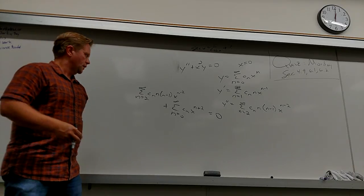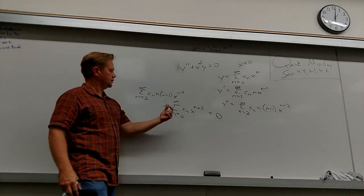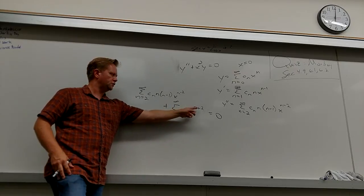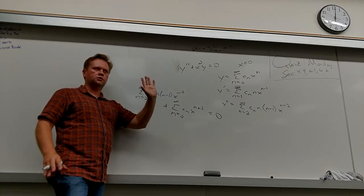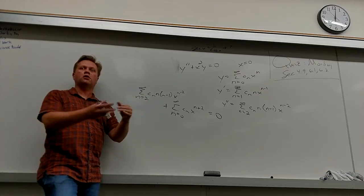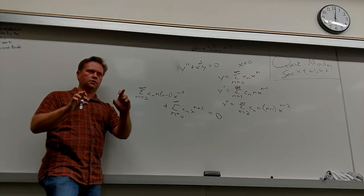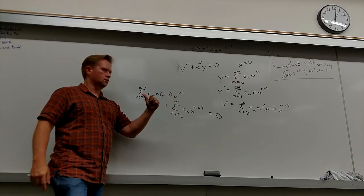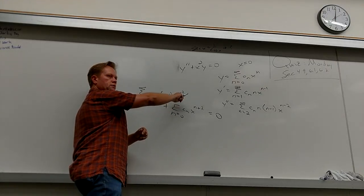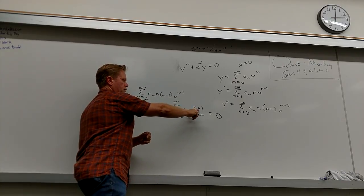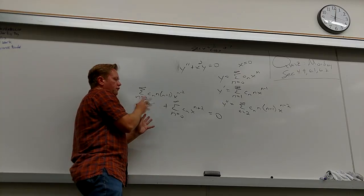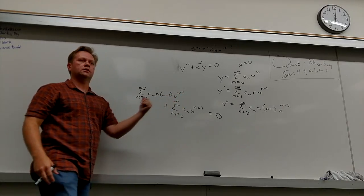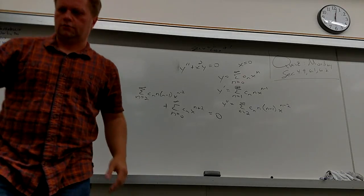There are a few different ways to do this. If you want to make the powers the same, that's where you should start — then making the indices the same is easy. When n equals 2, the power in the first sum is zero; when n equals 0, the power in the second sum is 2. You can either make them both match at n, or shift one. Let's try to make them both x to the n.